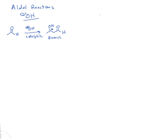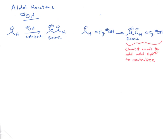Let's look at aldol reactions. With a catalytic amount of hydroxide, we know that's going to generate a beta-hydroxy aldehyde product. But what would happen if we added half an equivalent of hydroxide? It turns out that because hydroxide is used as a catalyst, if we start with half an equivalent, we would end up with half an equivalent of hydroxide at the end. We only make half an equivalent of the beta-hydroxy aldehyde product.